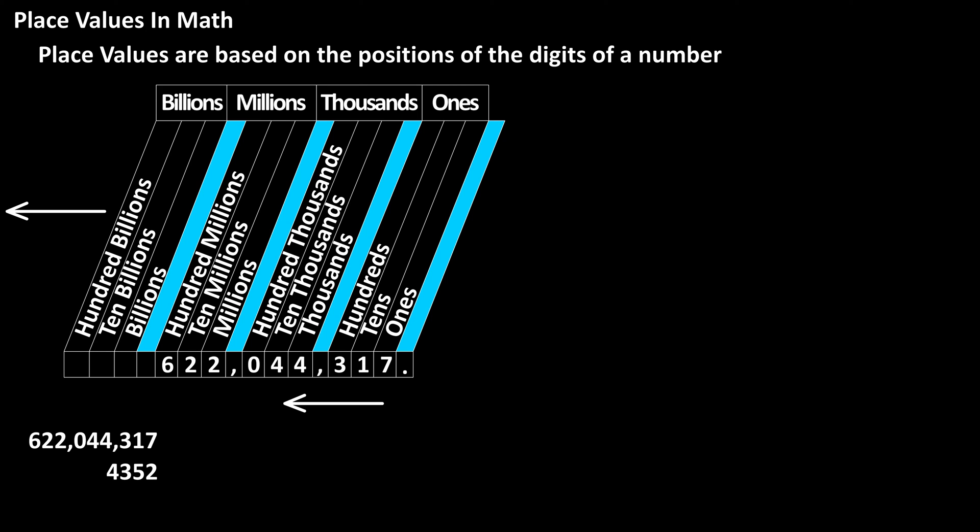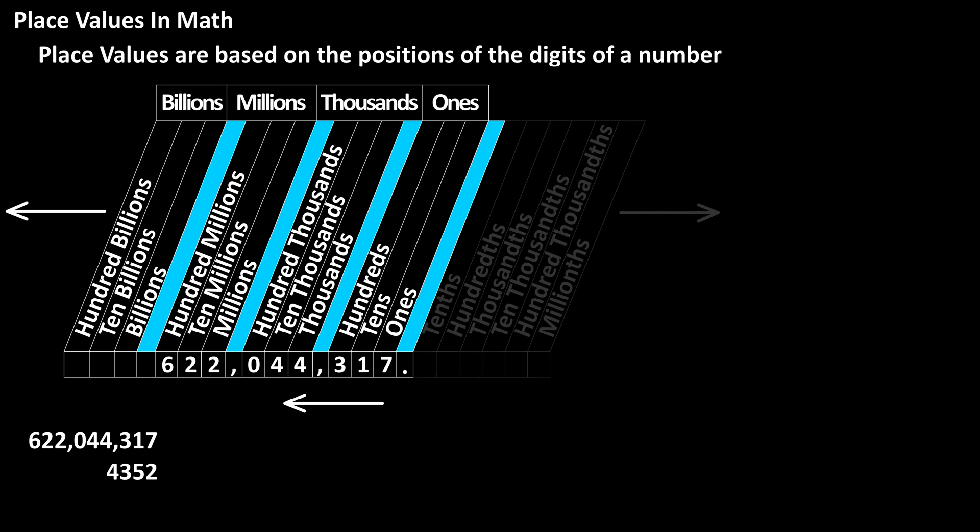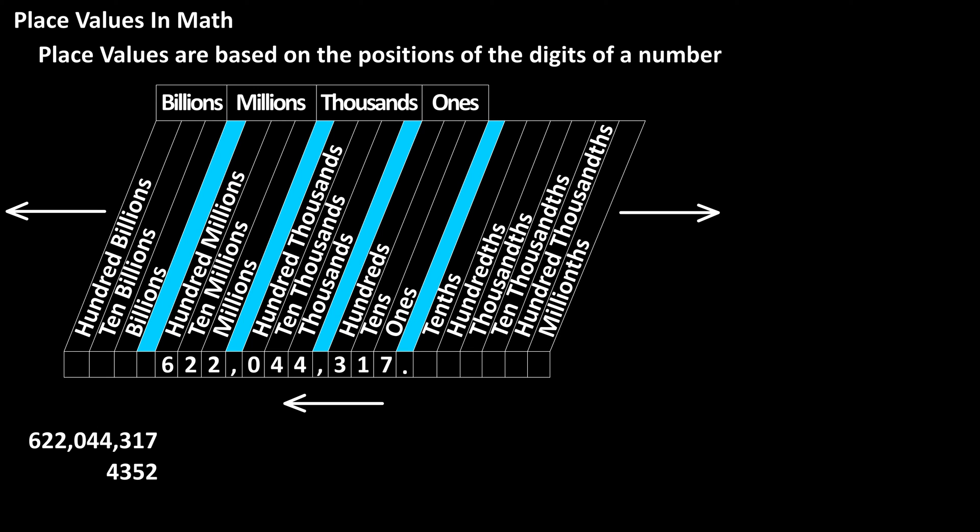And just like with whole numbers, decimals also have place values. Here is a chart showing the place values for decimals. Now going left to right, we start with the tenths column, as there is no ones column, then the hundredths column, and so on.